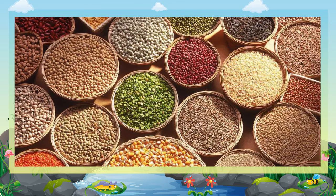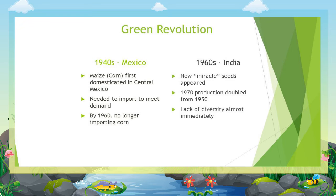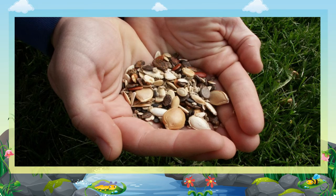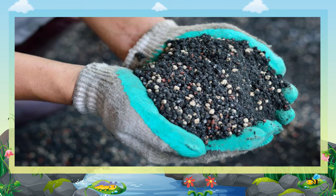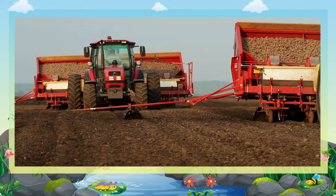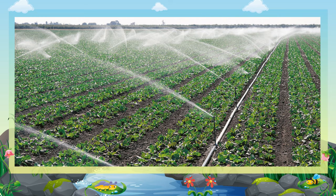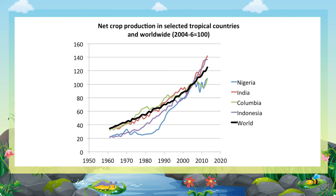Green Revolution: The extraordinary increase in food grain production in India after the mid-1960s is called the Green Revolution. The Green Revolution has been possible in India because of the following reasons: use of better quality seeds, using manures and fertilizers, using modern machinery, and increasing area under irrigation. As a result, the agricultural production of our country has risen significantly.